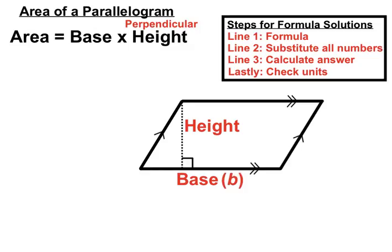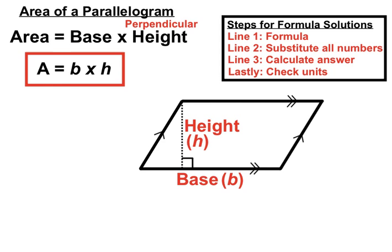If we call the base B for simplicity and the height H we could make a slightly shorter version of this. Area equals base times height. So as long as that height is perpendicular we can use that fairly simple formula for the area of a parallelogram.